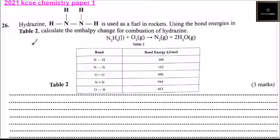This is question number 26. Hydrazine, given the formula N₂H₄, is used as a fuel in rockets. Using the bond energies in Table 2, calculate the enthalpy change for combustion.